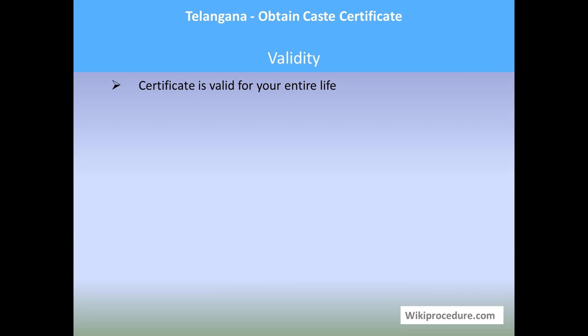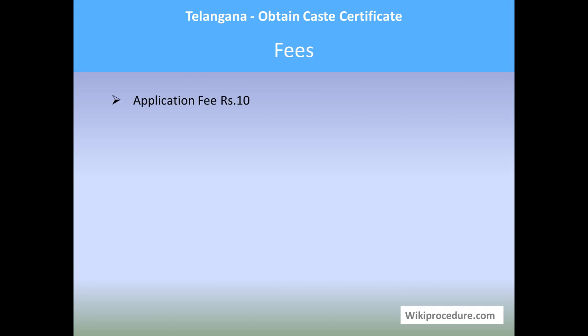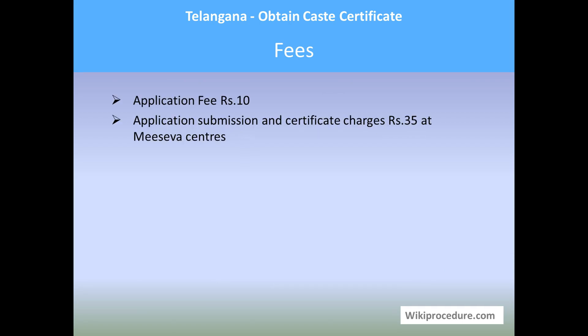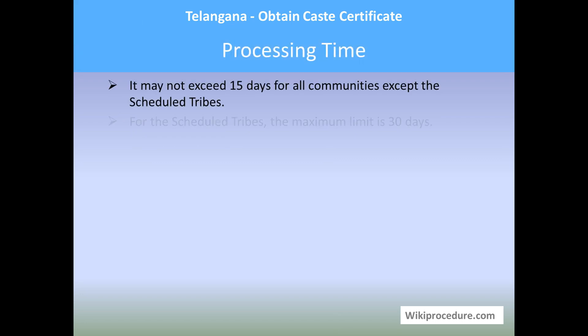The certificate is valid for your entire life. An application fee of rupees 10 and an application submission and certification charge of rupees 35 is required, collected at the MeSeva centers. Processing time may not exceed 15 days for all communities except Scheduled Tribes, for whom the maximum limit is 30 days. The Tasildar will intimate you to collect the certificate on the scheduled date.